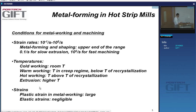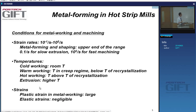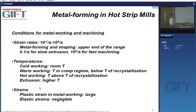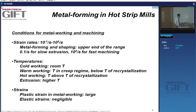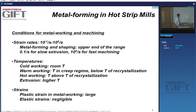Slow extrusions are about a tenth per second, and for fast machining it can go up to very high values. Temperatures: we usually talk about cold deformation, hot deformation or hot working, and also this intermediate term of warm working. Cold working is usually room temperature. Hot working is above the temperature of recrystallization. Warm working is right below the temperature of recrystallization.